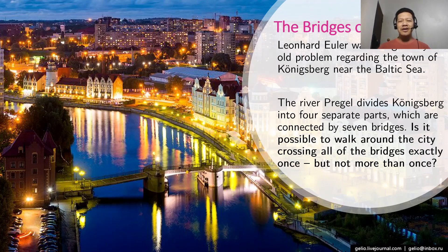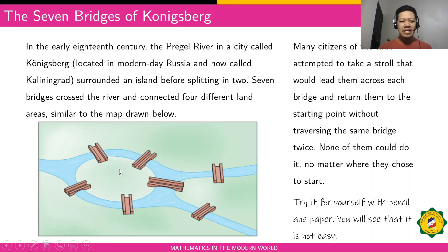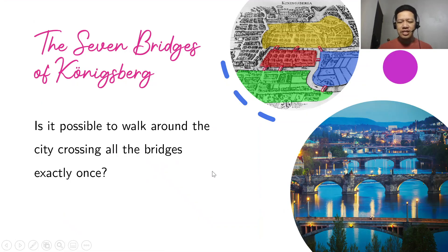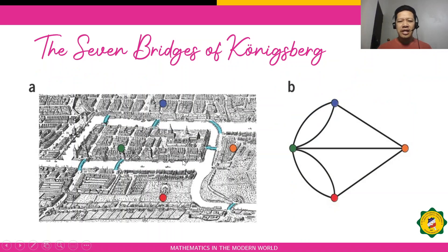Hello, my dear students. For this video, I'm going to show you the solution for the famous problem — the Seven Bridges of Königsberg. This is the problem: we're going to trace the bridges only once. Is it possible to walk around the city crossing all the bridges exactly once? We have here a map of the city of Königsberg with the seven bridges.